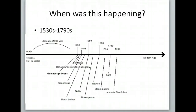Then we have Martin Luther added in — he happens before Galileo, before Shakespeare. So all of these different units: Shakespeare's from the Renaissance, Martin Luther's from the Protestant Reformation — all of these units are happening at the same time. Take a minute to pause the video and copy this down, then come back.